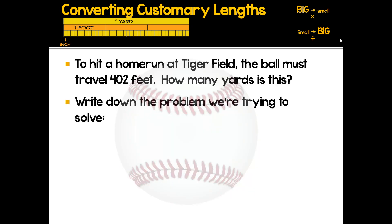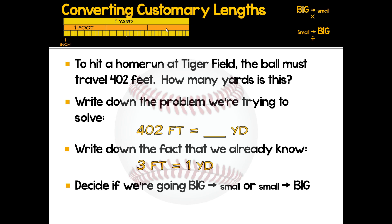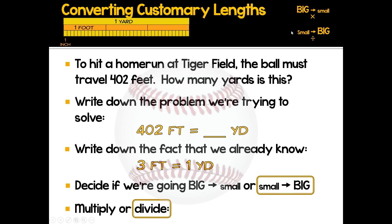How about baseball? To hit a home run at Tiger Field, the ball must travel 402 feet — how many yards is that? We're trying to solve: 402 feet equals how many yards. We know three feet equals one yard. We're going from feet, which are smaller, to yards — small to big — so we divide. 402 divided by three equals 134 yards.